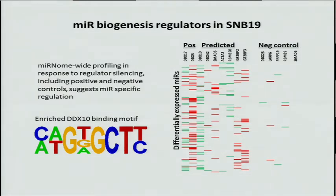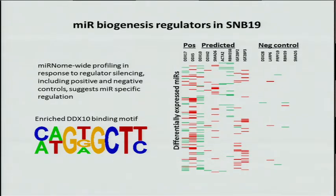We assembled a panel of predicted biogenesis regulators and a panel of negative controls — proteins similar to the predicted biogenesis regulators but not predicted to regulate biogenesis in glioblastoma. Two things to point out in this heat map: first, the response of the predicted biogenesis regulators is more similar to that of the positive control than the negative control. Second, looking at every row, you can see that microRNAs respond differently to the silencing of different regulators, which is in line with the assertion that these are sequence-specific.